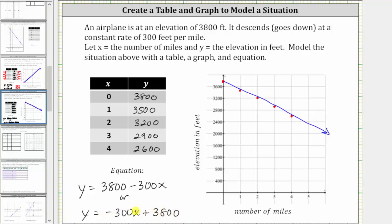The second equation is in what's called slope-intercept form. Just keep in mind the equation, the graph, and the table are only valid in this situation when x, number of miles, is greater than or equal to zero and less than or equal to 12 and 2/3, where after 12 and 2/3 miles, the elevation is zero.